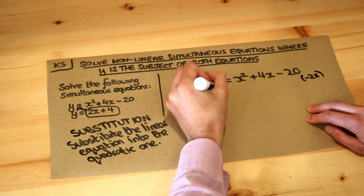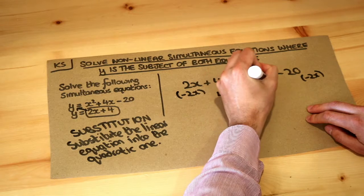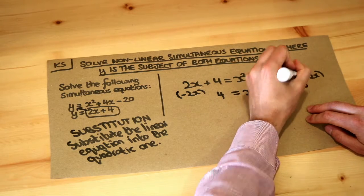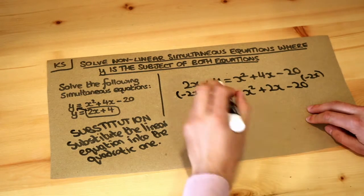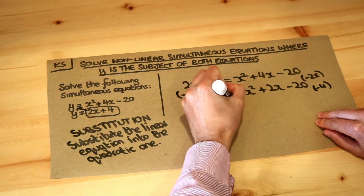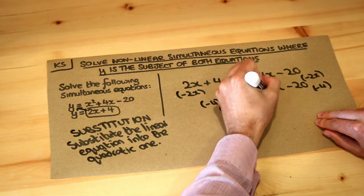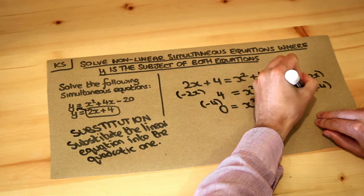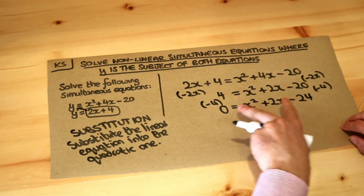That gives us 4 equals x squared plus 2x minus 20, and we still want 0 on the left hand side so we're going to subtract 4. That gives you 0 equals x squared plus 2x minus 24. Now we've got a quadratic expression equals 0.